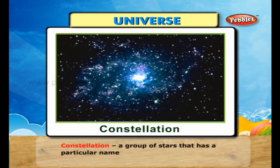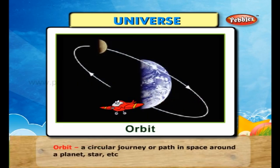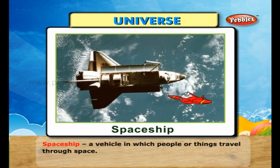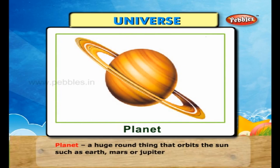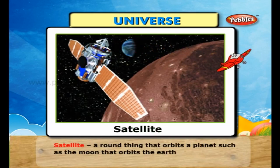A constellation is a group of stars that has a particular name. An orbit is a circular journey or path in space around a planet, star, etc. A spaceship is a vehicle in which people or things travel through space. A planet is a huge round thing that orbits the sun, such as Earth, Mars or Jupiter. A satellite is a round thing that orbits a planet, such as the moon that orbits the earth.